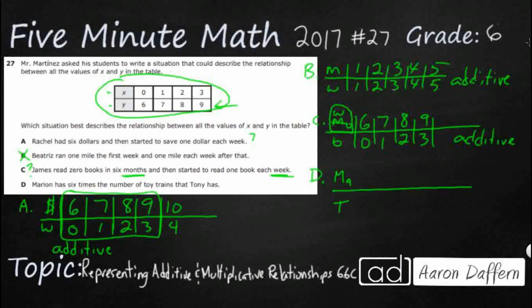So Marion and Tony, and Marion has six times the number of trains that Tony has. So if Tony has one, Marion's got six. Tony's got two, twelve, three, eighteen, four, twenty-four. This is a multiplicative relationship. Multiplicative because we're multiplying by six.